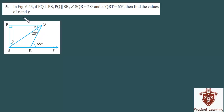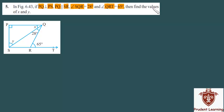Let us see the 5th question of the exercise. In figure 6.43, if PQ is perpendicular to PS, PQ is parallel to SR, angle SQR is 28 degrees and angle QRT is 65 degrees, then find the values of x and y.